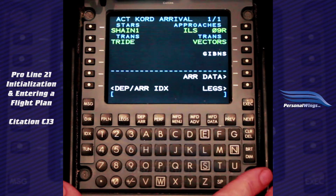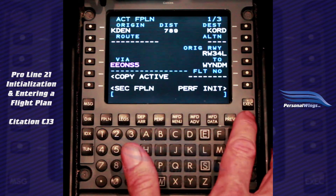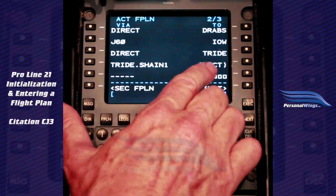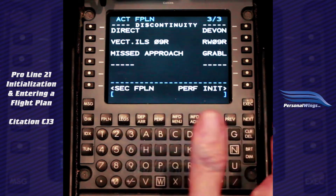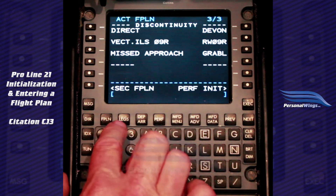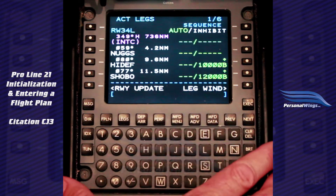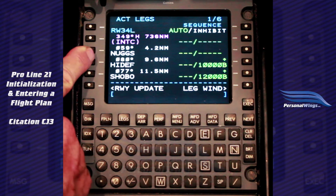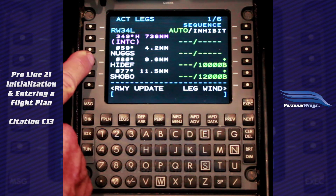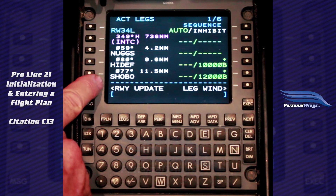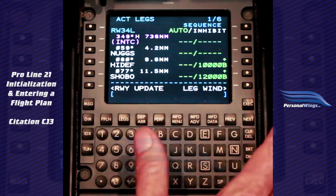Now we want to go back and verify that flight plan. We come back to flight plan and go down each page: Direct, J60, Direct, TRIED, TRIED, Shane 1, Vectors, our approach — beautiful, we've got that set. Earlier I mentioned the difference between flight plan and legs. On the legs page, notice each one of those legs in the departure, the airway, or the arrival is elucidated in much more detail. On the flight plan page it tells us the name of the departure, but on the legs page it actually tells us what legs we have.